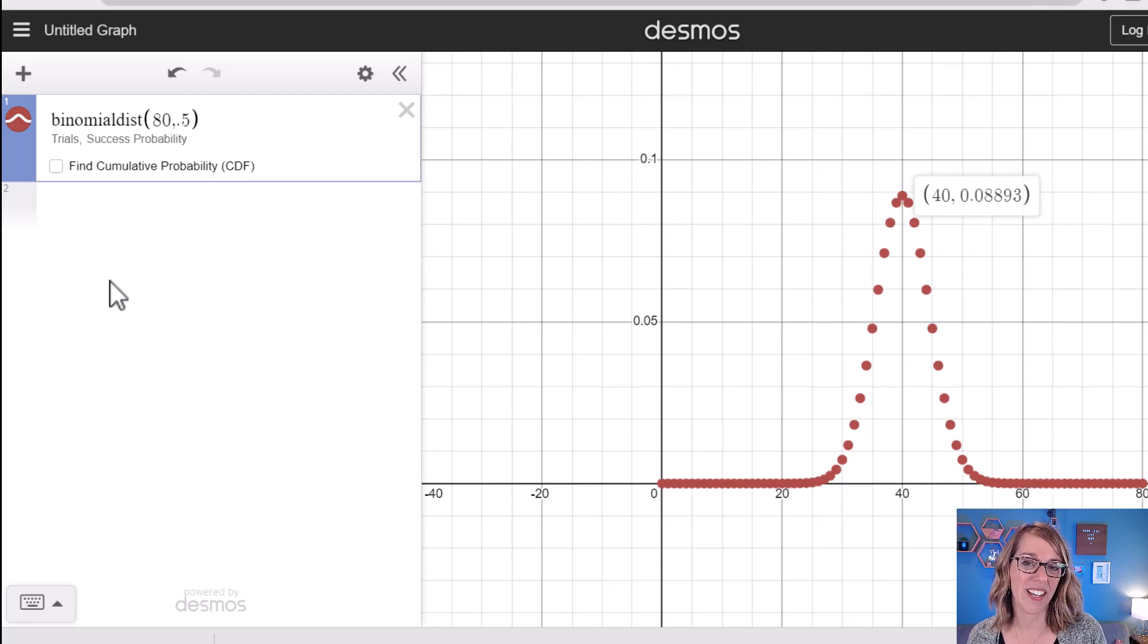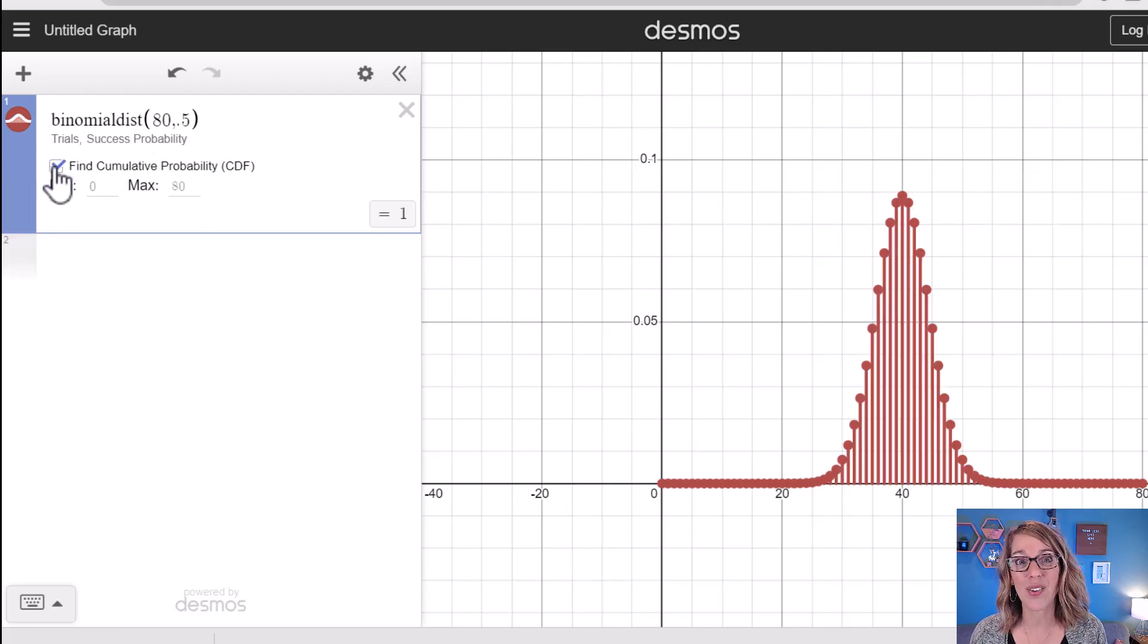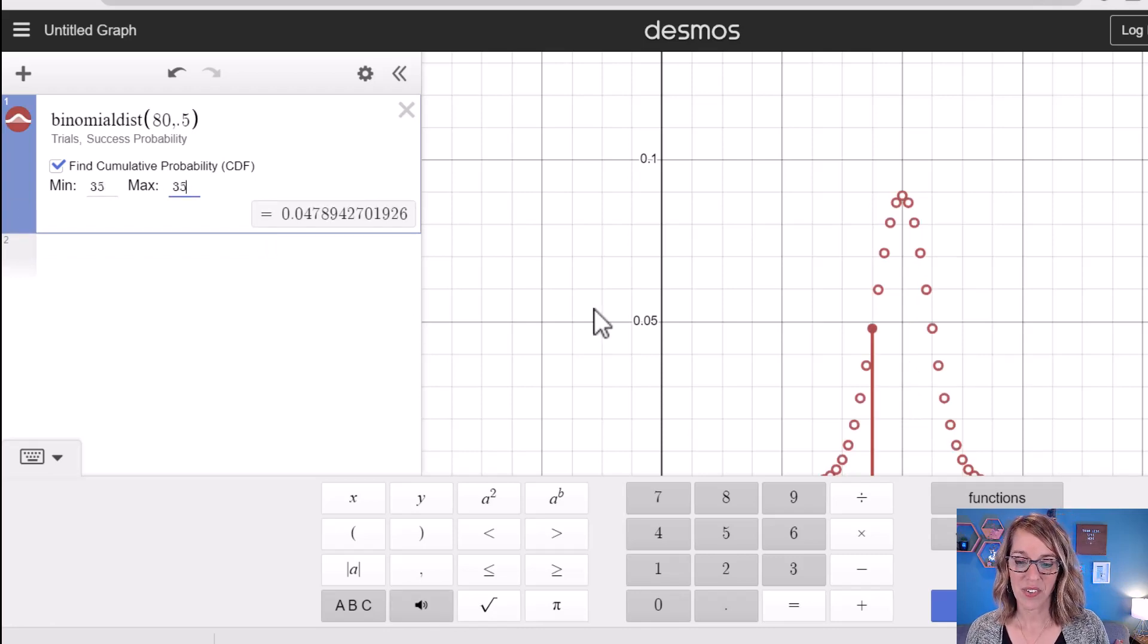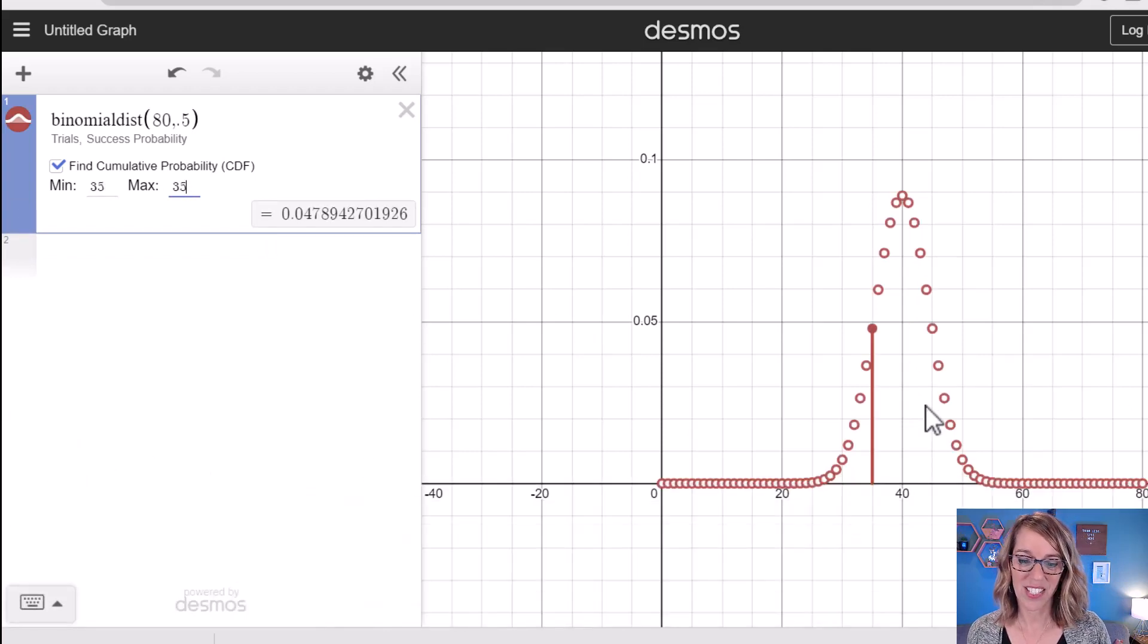But we wanted to find the probability of getting 35 tails. I'm going to check this box right here: find the cumulative probability. Now I don't want to find the probability of all the different cases, which is what it's given me right now. So this is giving me the probability of getting anywhere between 0 and 80 tails, and take a look at that probability - it's 1 or 100%. I want the probability instead of 35, so I'm going to let my minimum be 35 and my maximum be 35 as well. You can see if I get rid of my keypad here, it has given me a bar for that particular probability. I can even click on it here, and there it is: my probability 0.0478.